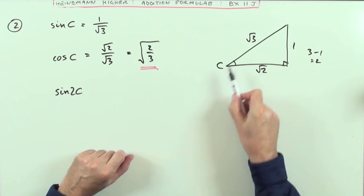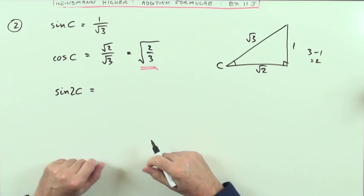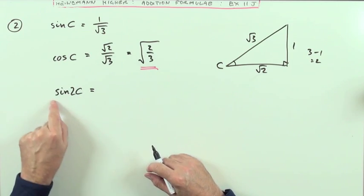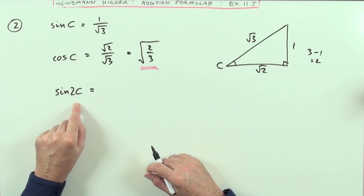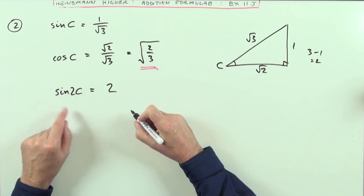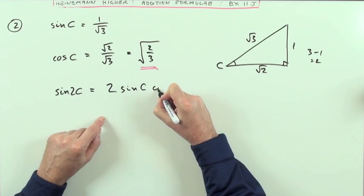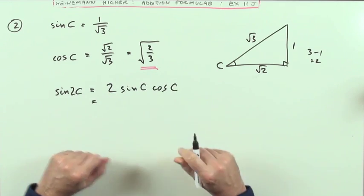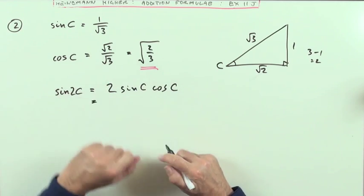Now, for the sine of double the angle, that doesn't mean you just do 2 times that. No, there's an expansion for this. And thankfully, the sine 2C one is fairly simple, because there's only one of them. Sine 2C expands to 2 sine C cosine C. No decisions to be made. And I know both of these already.